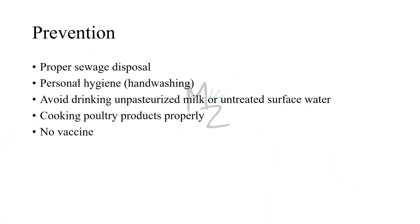Prevention: proper sewage disposal and personal hygiene like proper hand washing can help prevent infection. Avoid drinking unpasteurized milk or untreated water. Avoid eating undercooked poultry products — cook them properly before eating. There is no vaccine to prevent infections caused by Campylobacter.